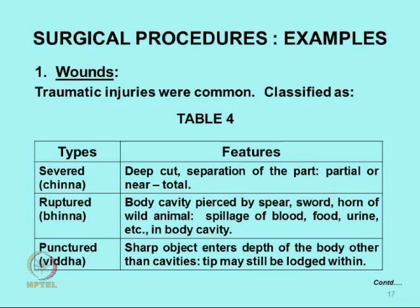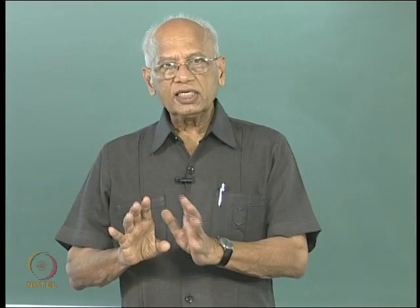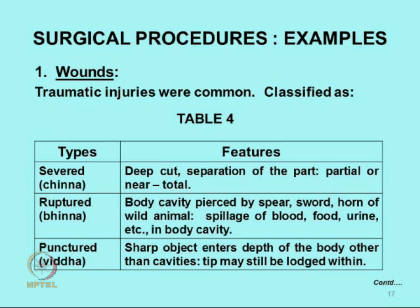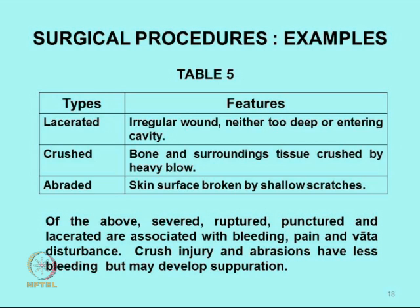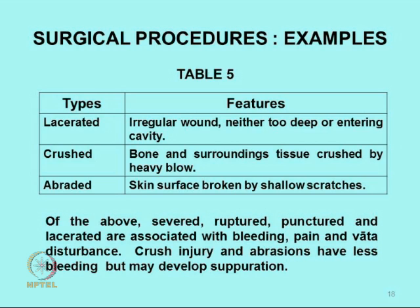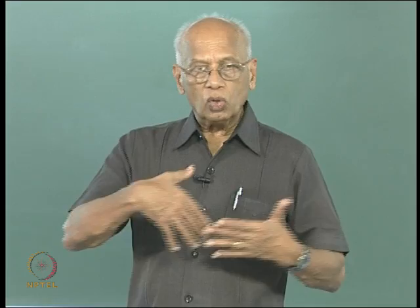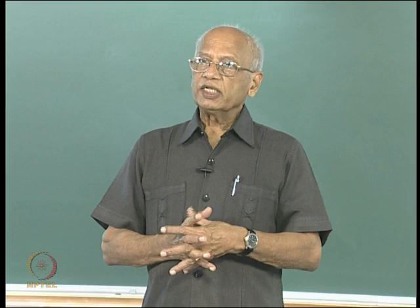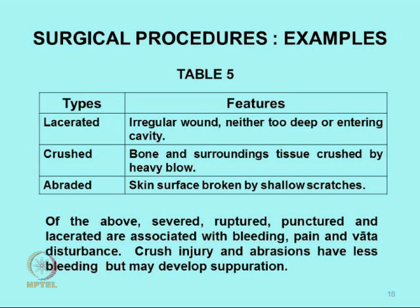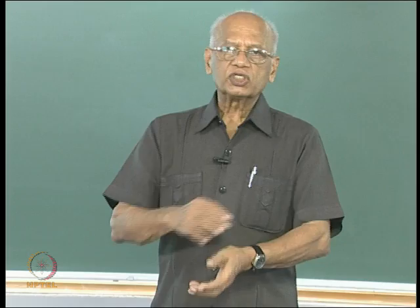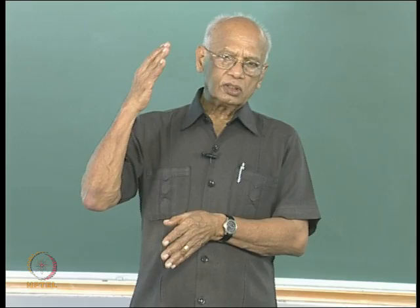The punctured type is where a sharp object enters — the buttocks or back — without entering a body cavity but going deep into tissue; sometimes part may break off and be retained inside. Then laceration — a deep irregular cut from falling on a sharp object that does not enter a body cavity. Then crush injury — a tree falling on someone — which may be combined with damage to bone or joints, with no open laceration but a great deal of compressed soft tissue. And lastly, abrasions — small superficial skin abrasions, the mildest type.